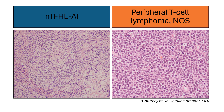The morphological spectrum of PTCL NOS is very broad, with highly variable tumor cell cytologic characteristics and inflammatory background. Tumor cells can be large and anaplastic, or alternatively show a more monomorphic, medium-sized, monocytoid morphology.